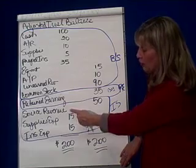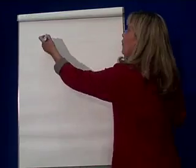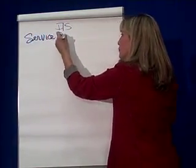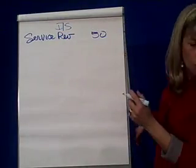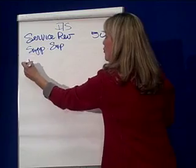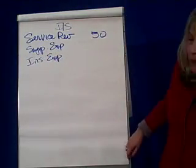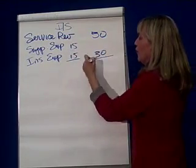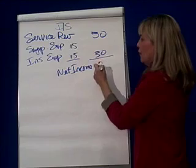The income statement is going to be our service revenue minus our two expenses to equal net income. Service revenue was 50, and we had two expenses: supplies expense and insurance expense — both were 15 — so our total expenses were 30. Therefore, our net income is 20.